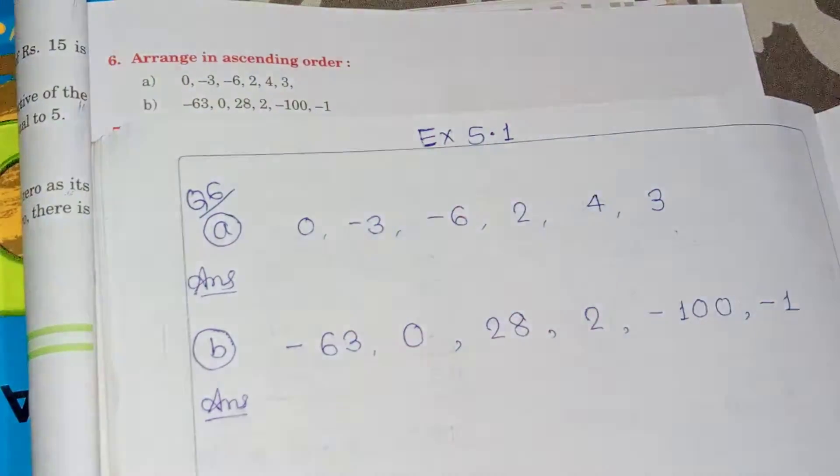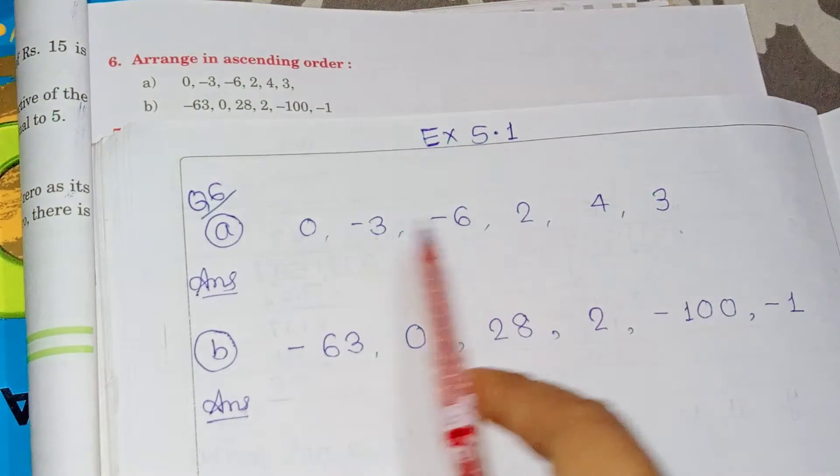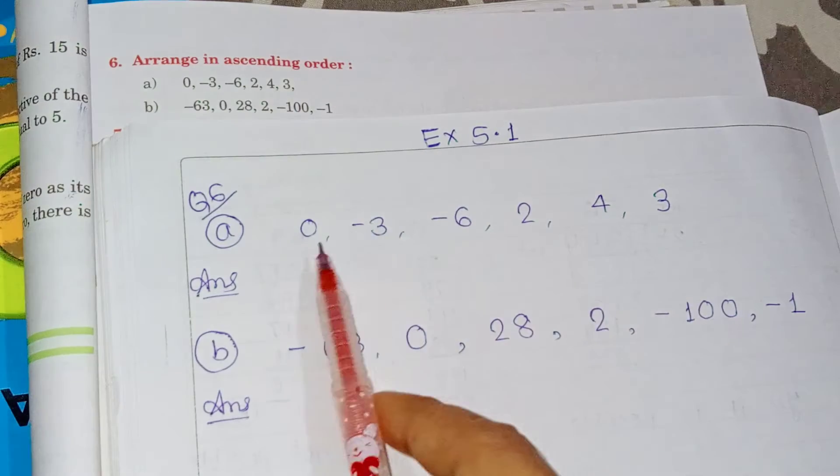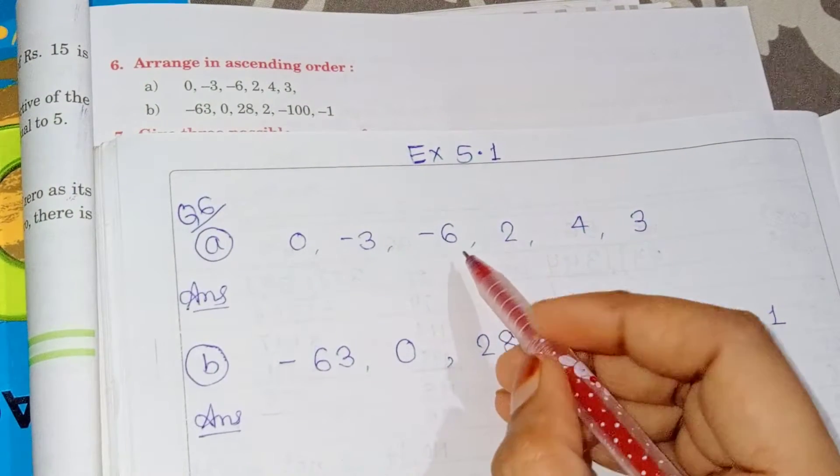Ascending order means small to big. We have to compare these numbers. We will see all the small numbers. In negative numbers, the number that is the biggest will be the smallest number.